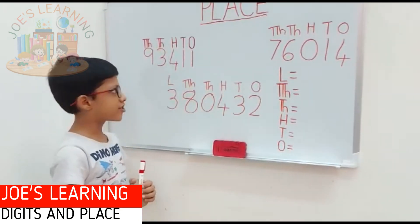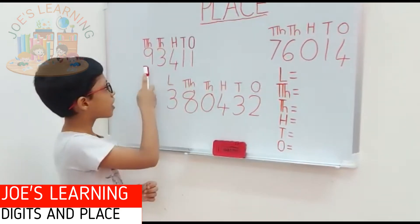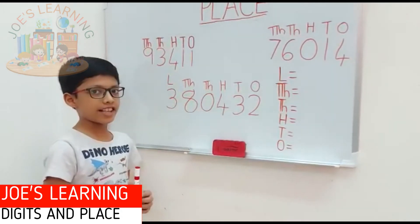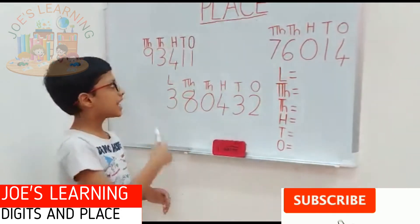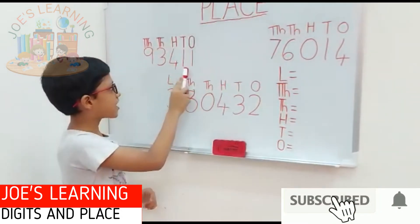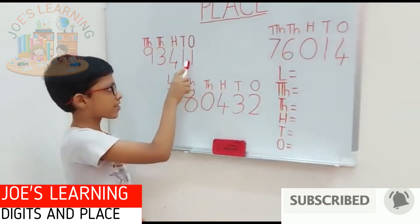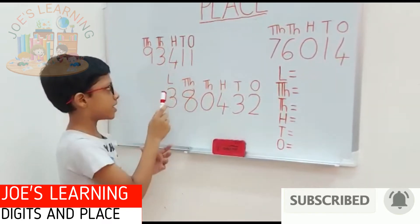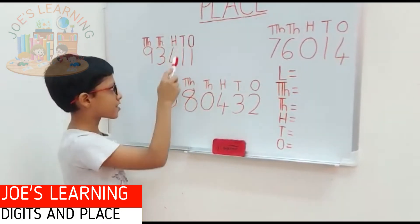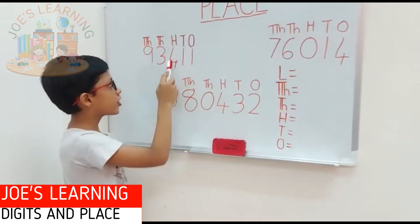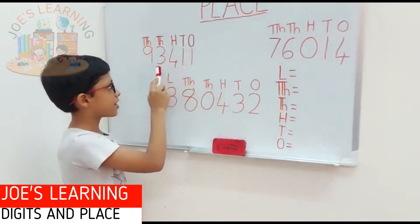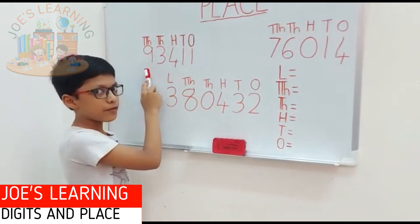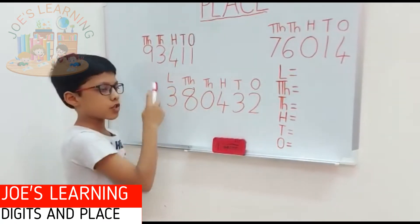Let us first take the example of 93,411. In this example, the first place is the 1's place, the second is the 10's place, the third is the 100's place, the fourth is the 1000's place, and the fifth is the 10,000's place.